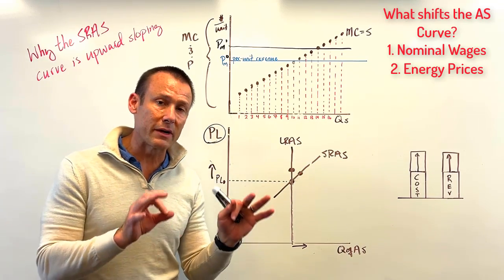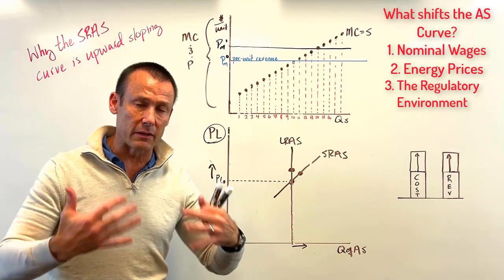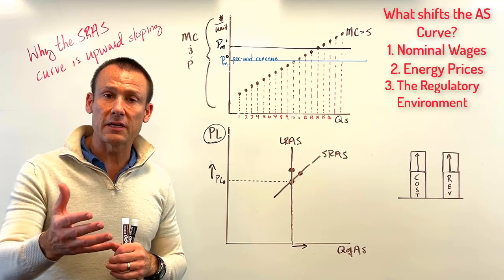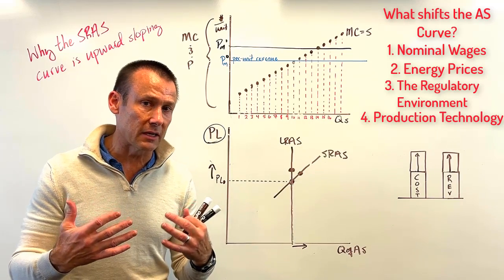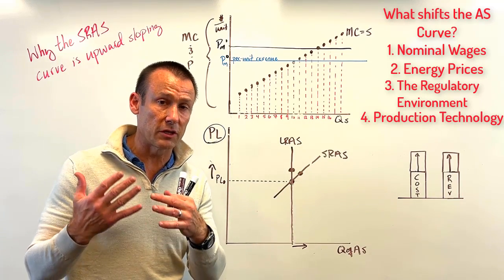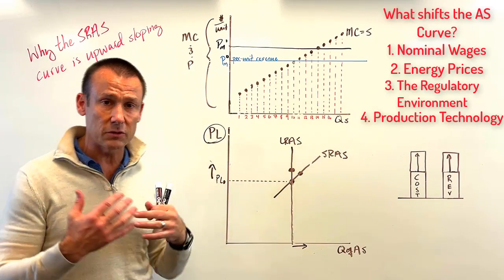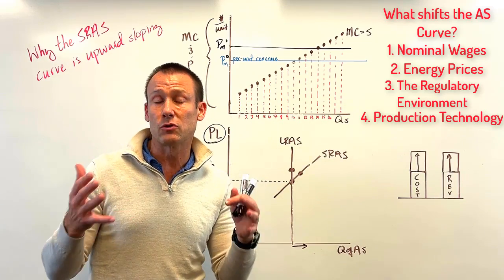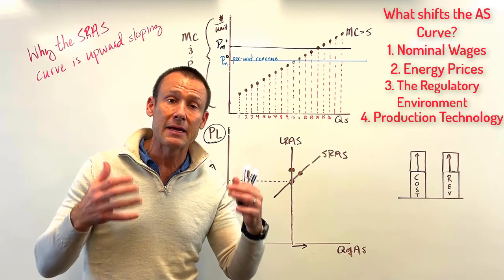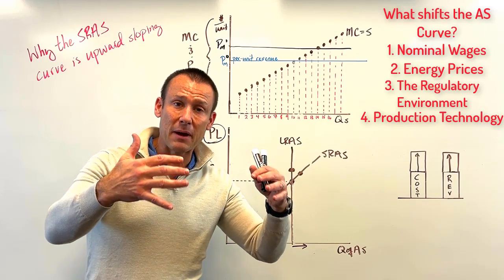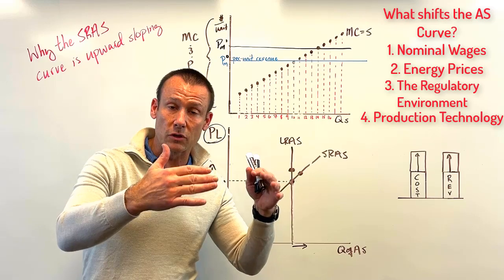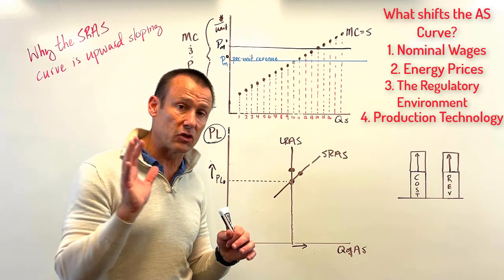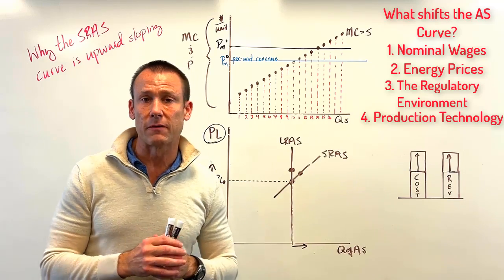Also, the regulatory environment: if we begin to regulate businesses more, that adds cost and shifts the AS curve. Or production technology: if we improve production technology, the per-unit cost of production goes down. Something like AI — it's 2023 — might have the chance to reduce the cost of producing many different goods. That's definitely something that would shift the aggregate supply curve.